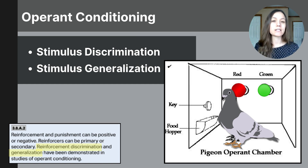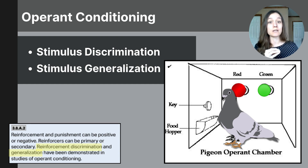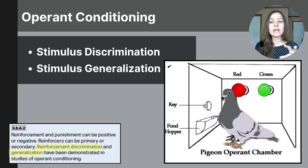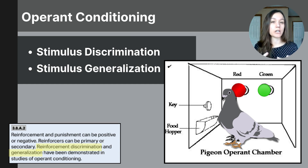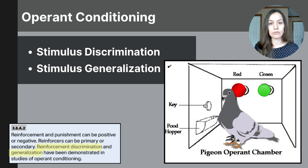On the other hand, stimulus generalization happens when an animal trained with one stimulus begins to produce that behavior with a similar stimulus. So if a pigeon is trained to peck at a key when it sees a green light, it might also start pecking when it sees a blue light, even though it wasn't specifically trained with that blue light. This illustrates the difference between stimulus discrimination and stimulus generalization.